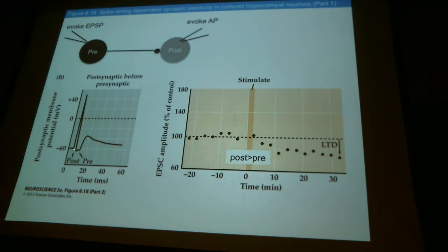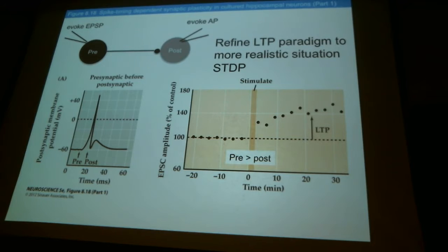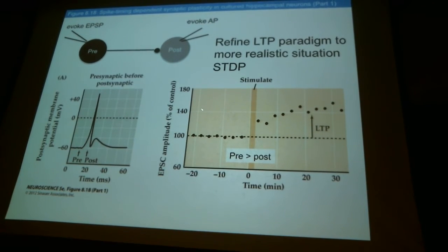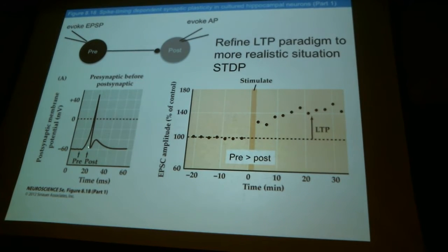If you elicit a spike in the postsynaptic cell, wait a few milliseconds, and then elicit an EPSP, you can actually get a decrease in the EPSP response. During the stimulation paradigm, you're doing multiple pairs of pre prior to post, and when you measure afterwards over time, you get an enhancement of the response. In a different experiment, if you reverse the timing so the postsynaptic potential arrives before the presynaptic EPSP, when you measure after that pairing paradigm, the EPSP is smaller — this is long-term depression.